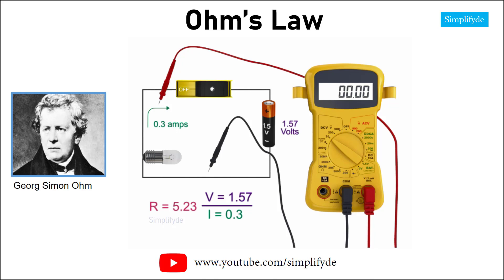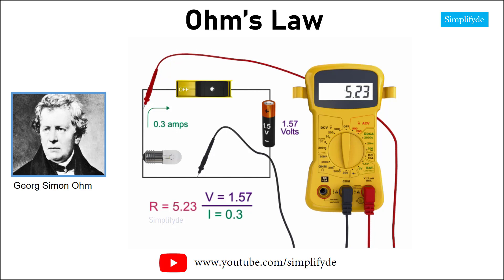Look for the ohm symbol, which is the Greek letter omega, and switch the meter to 200. Now, place the leads on either side of the light bulb. You should see a reading of 5.23 ohms.